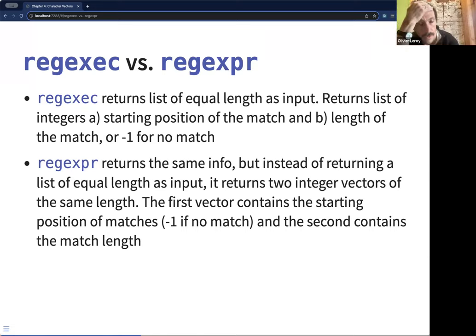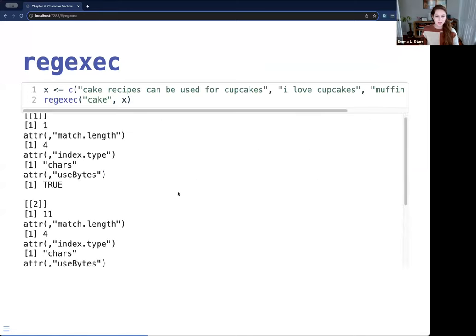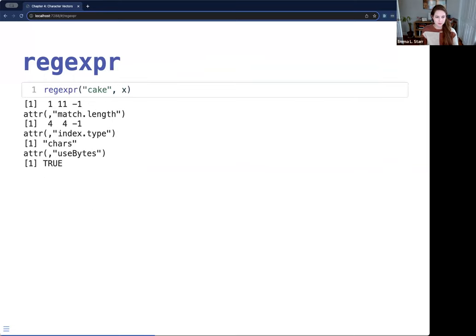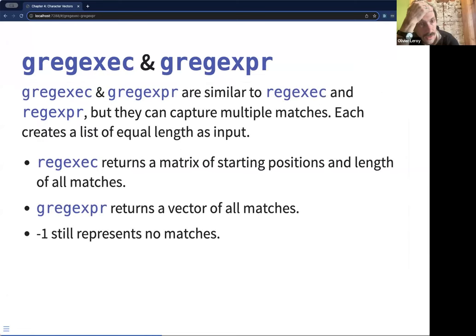And then regexpr, instead of returning a list of equal length as the input, it returns two integer vectors of the same length. So same information packaged up a little differently. I think it was on the list also, but every time I'm going to use them, I'm going to read the page. And so then I was just demonstrating what the output looks like here, and this is for substring position.